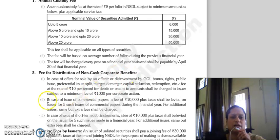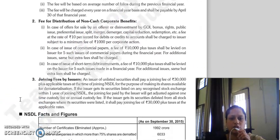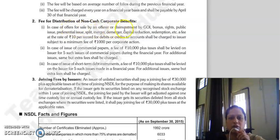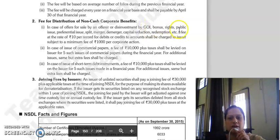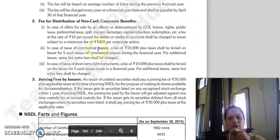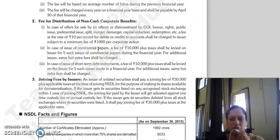Next is fee for distribution of non-cash corporate benefits. In case you have offered for sale by an offerer or investment by the Government of India — Bonus, Rights, Public Issue, Preferential Issue, Split, Merger, Demerger, Capital Reduction, Redemption, etc. — those non-cash corporate benefits are transferred to investors.